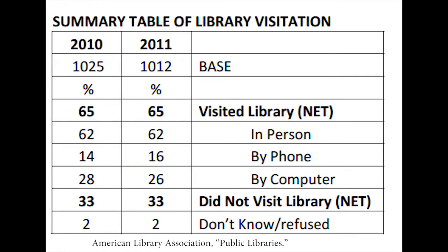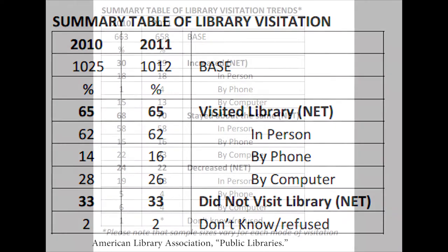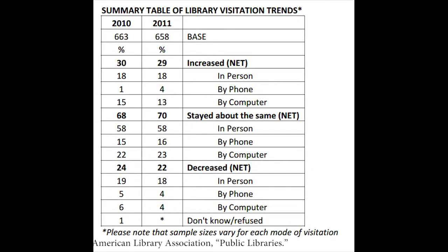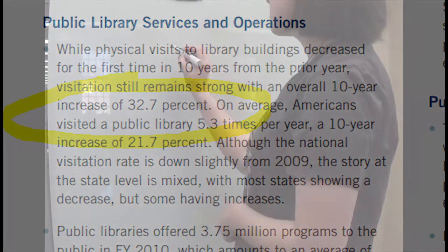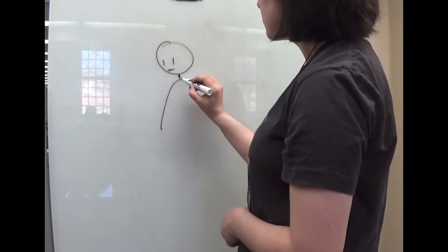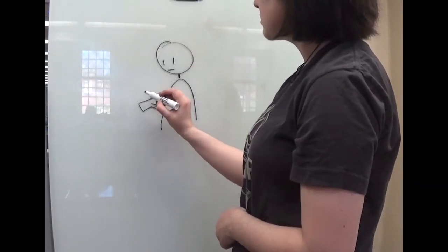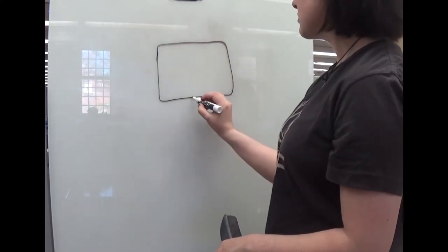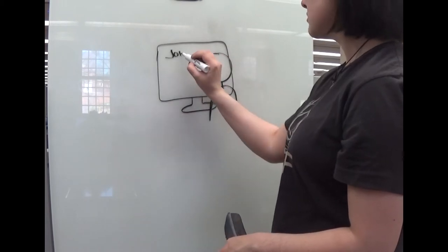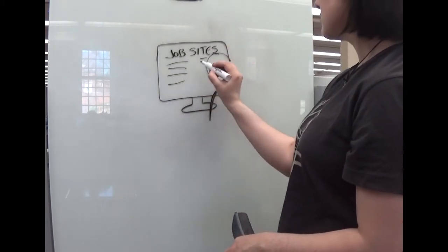Studies from the Institute for Museum and Library Services and the American Library Association also show increased usage. Visits to libraries increased 32.7% over 10 years from 2000 to 2010. One library system in Washington State thanks the recession in 2007 and 2008 for this uptick.